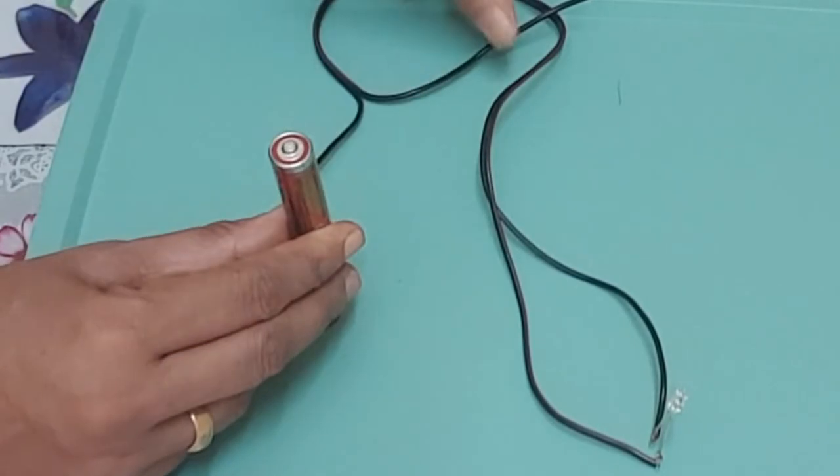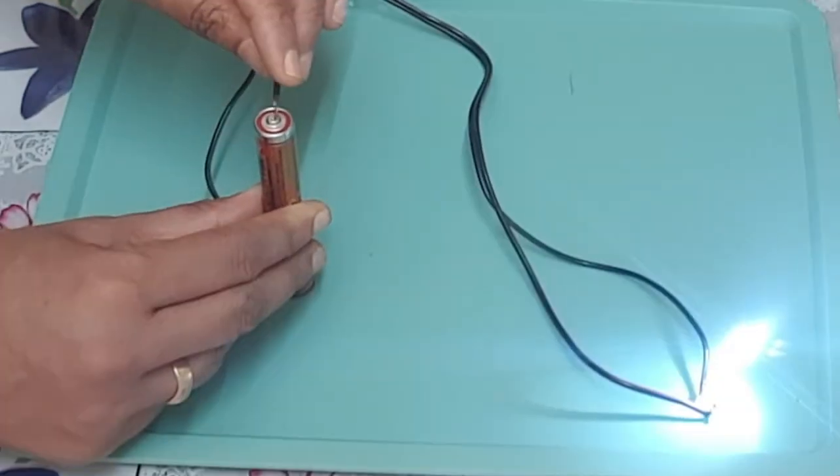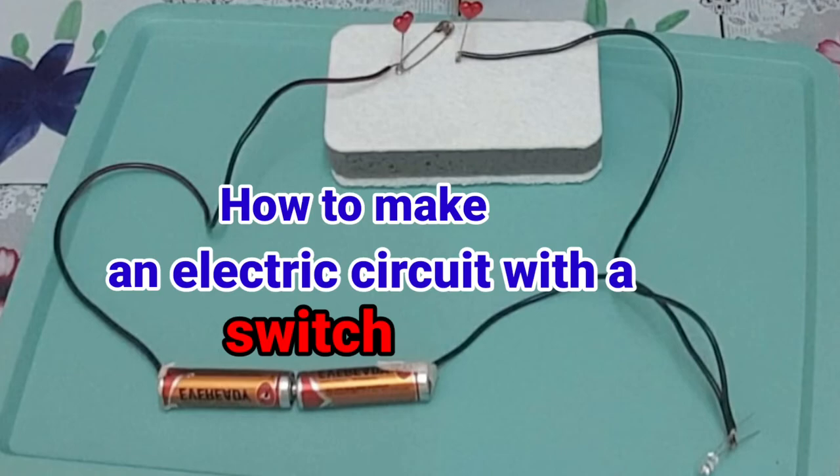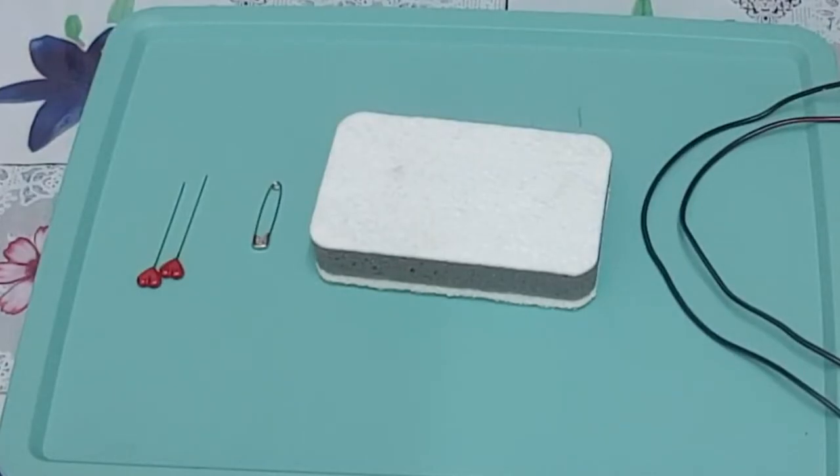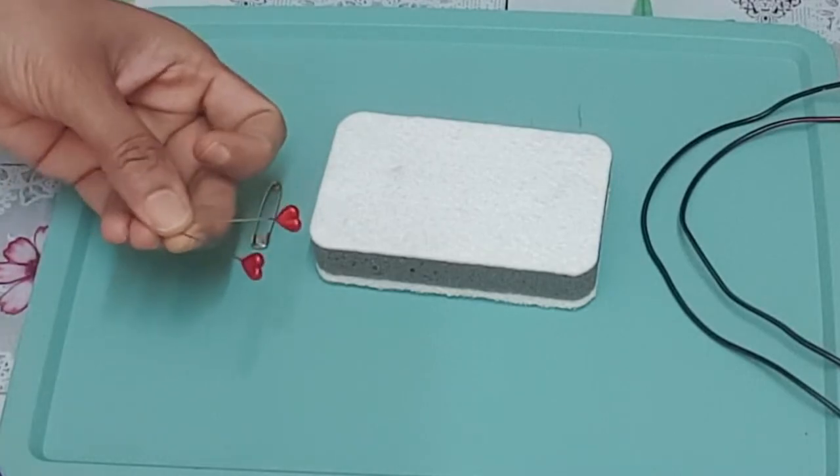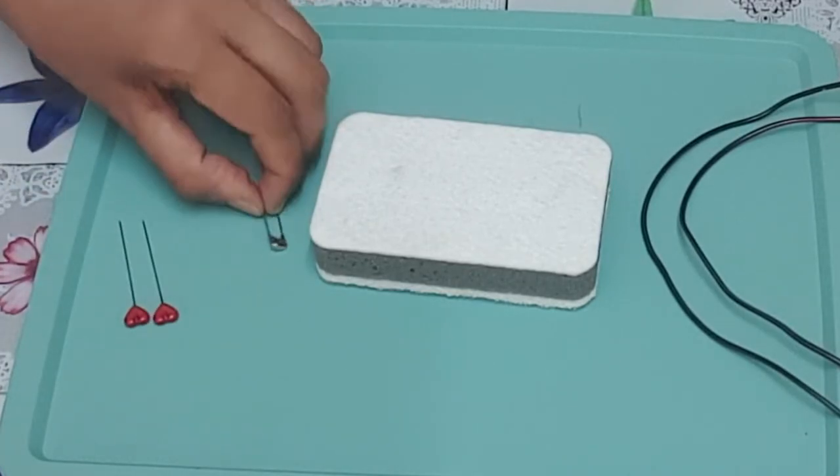Dear children, we can make a simple and easy switch to use in our circuit. You can make a switch using two drawing pins, a safety pin, two wires, and a small sheet of thermocol or a wooden board.